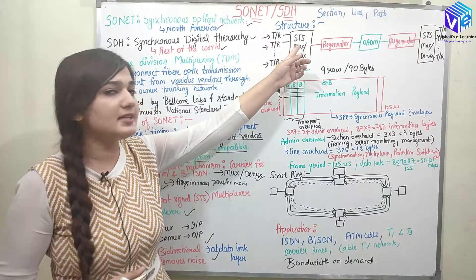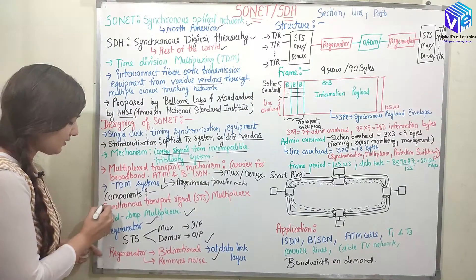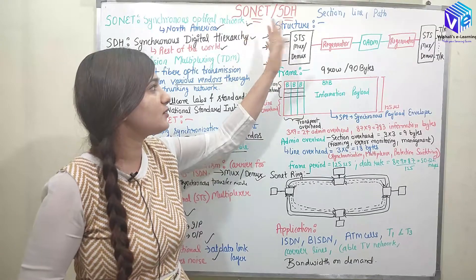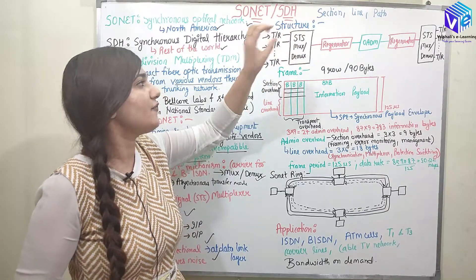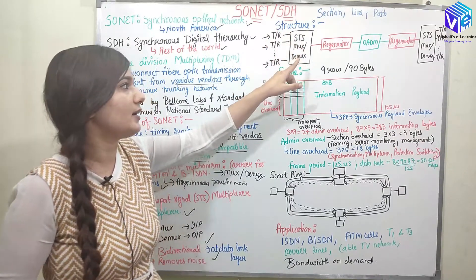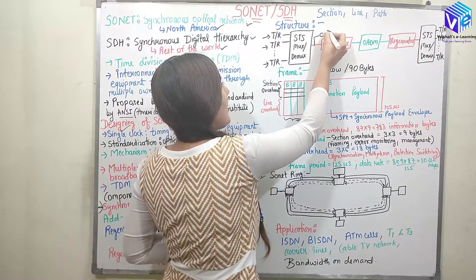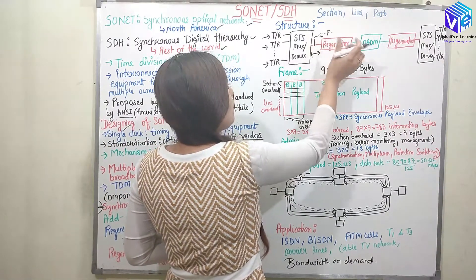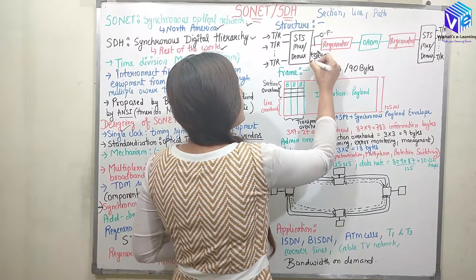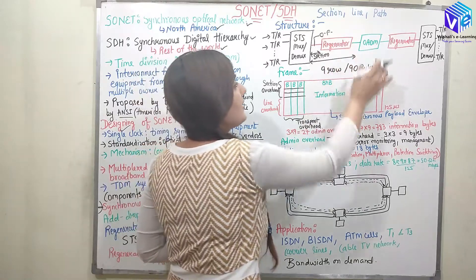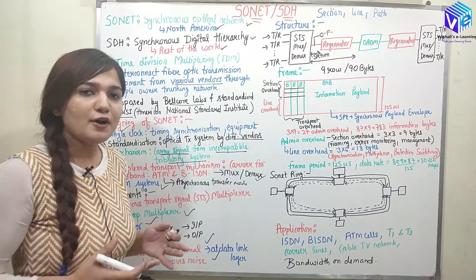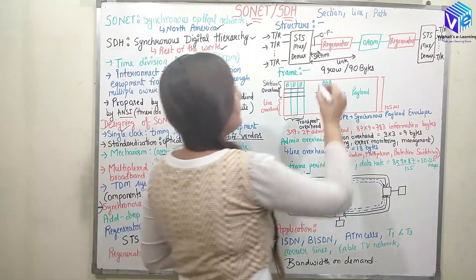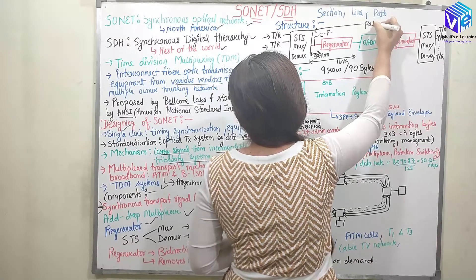We have the STS MUX/DMUX: when used as a transmitter, the MUX is used; when used as a receiver, the DMUX is used. After that we have the optical fiber of very long duration. The connection between two equipments is the section. After the regenerator we have the optical add-drop network to add or remove wavelengths. That connection is the link, and the overall end-to-end connection is the path.